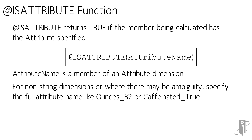For non-string dimensions or dimensions where there might be ambiguity, you have to preface it. In our example, 32 could be an ounce size or the population of a really tiny town, so we have to say Ounces_32. In a Boolean example, we might have true and false in multiple dimensions, so I need to say Caffeinated_True. If the attribute name isn't in the outline or isn't specified the way Essbase expects it, it doesn't return false — it actually returns an error: 'Error executing formula - invalid member name in the function.'